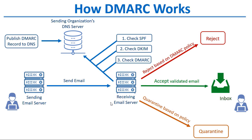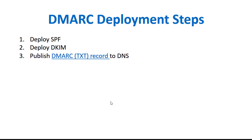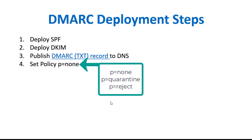In addition, domain owners can instruct receiving servers and gateways to send them back reports on how their domain is being used. The steps to deploy DMARC include first deploying SPF and DKIM, then publishing a DMARC TXT record to DNS, and beginning with a policy in your DMARC record explaining what to do with messages that did not fully align with SPF and DKIM — which can be a policy of none, quarantine, or reject.